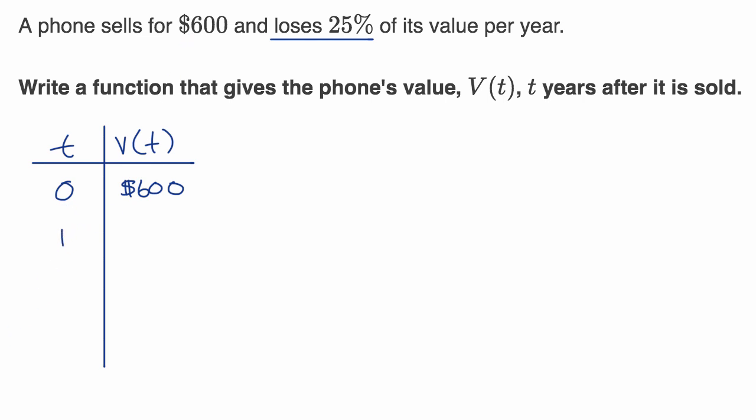Now, T equals one, what's going to happen? Well, it says that the phone loses 25% of its value per year. Another way to rewrite that is that it retains 100% minus 25% of its value per year, or it retains 75% of its value per year.